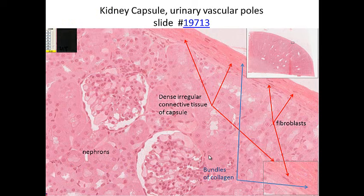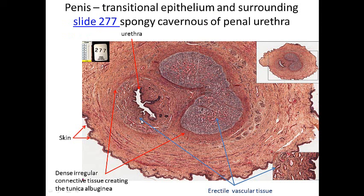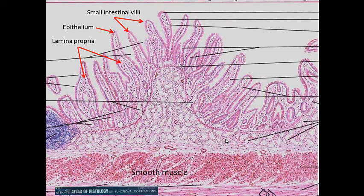Here's the kidney capsule — dense irregular connective tissue with fibroblasts throughout, and bundles of type I collagen fibers. Here's another dense irregular connective tissue example: the tunica albuginea, a connective tissue band that surrounds the erectile tissue in the penis, causing the erection to go straight outward as opposed to expanding like a balloon when erectile tissue fills with blood. We also see smooth muscle cells in through there, but the other small nuclei would be fibroblasts.